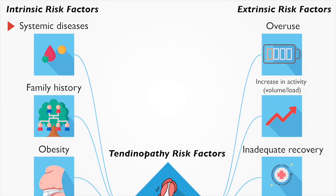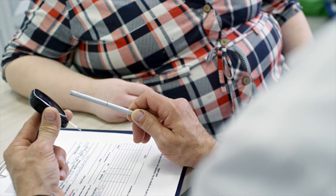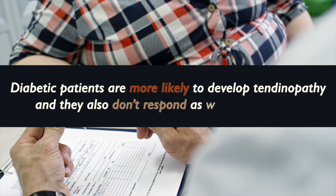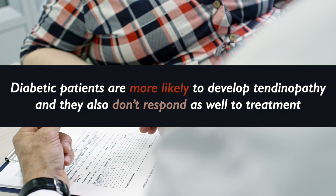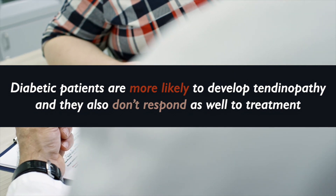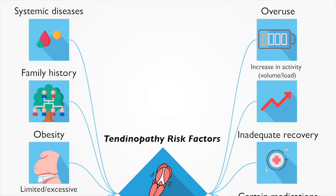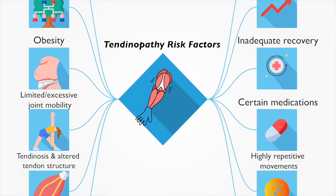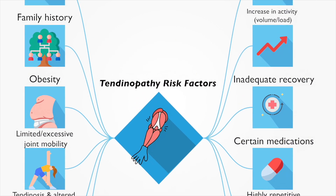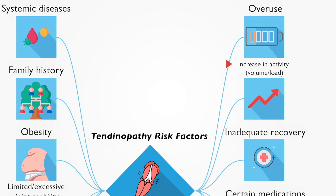More recently, clinicians have come to appreciate the role of metabolic diseases in tendinopathy. The most common example is diabetes mellitus — not only are diabetic patients more likely to develop tendinopathy, they also don't respond as well to treatment. Even in the absence of discrete diagnoses, a relatively small increase in waist size is a risk factor for tendinopathy.